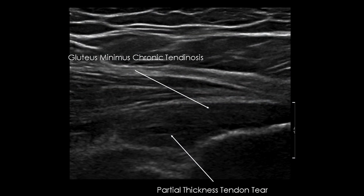Example of tendinopathy of the gluteus minimus with partial tear. The tendon has a thickened, hypoechoic, and moderately dedifferentiated appearance reflecting chronic tendinitis, associated with an anechoic pseudoliquid linear lesion in the longitudinal axis of the tendon corresponding to a partial tear.